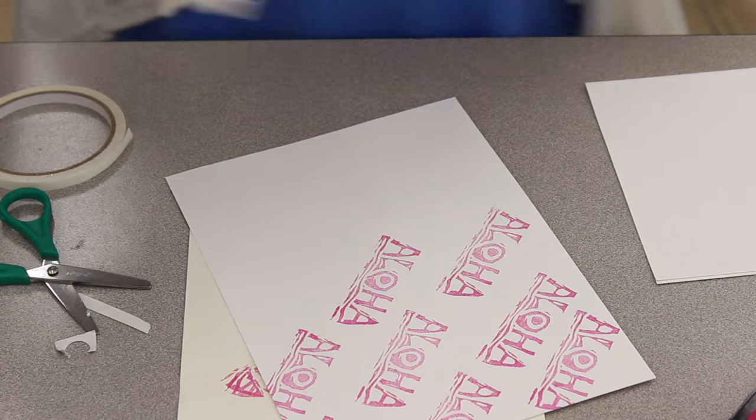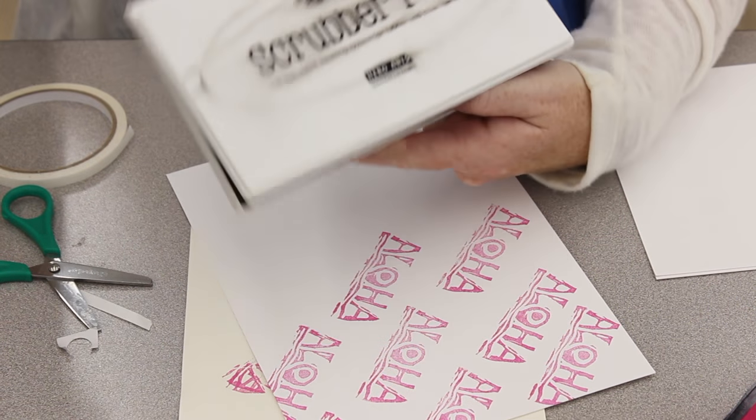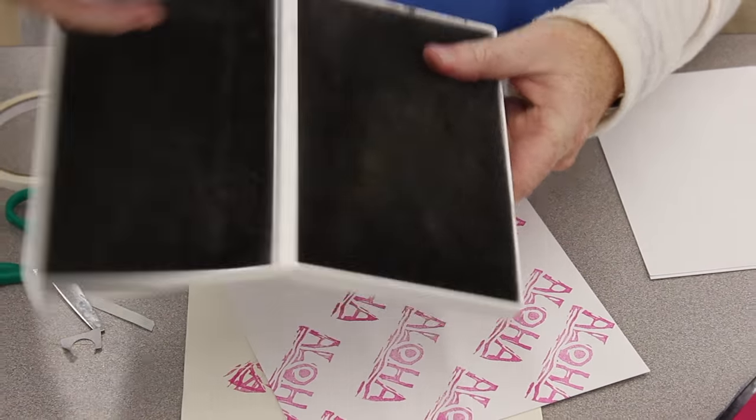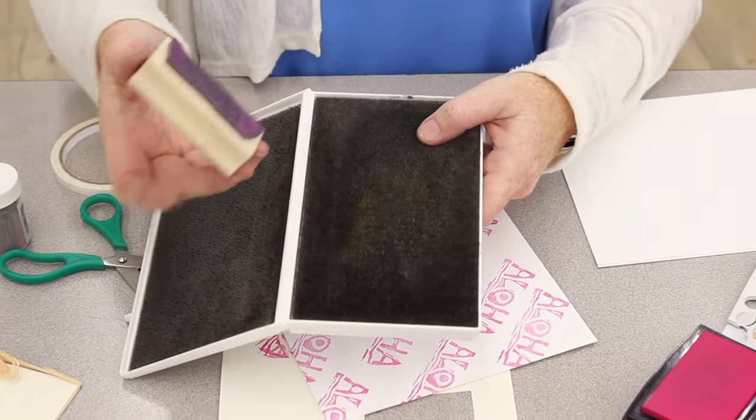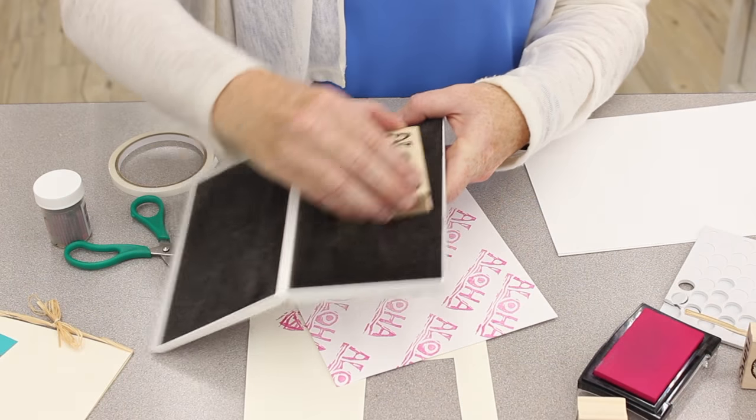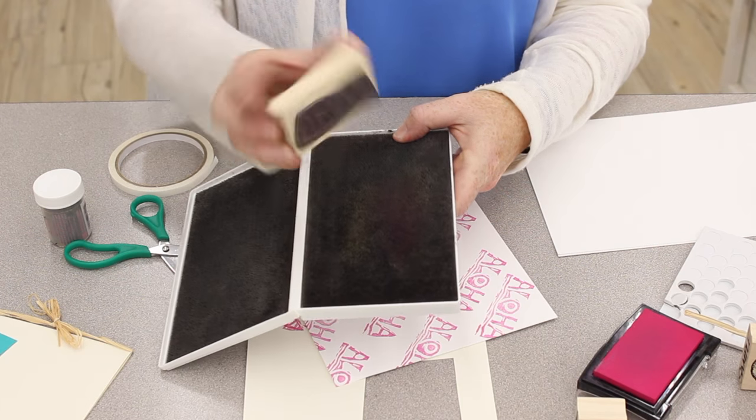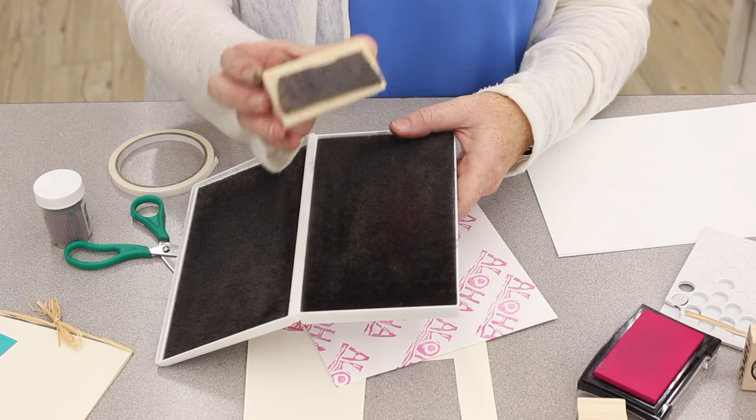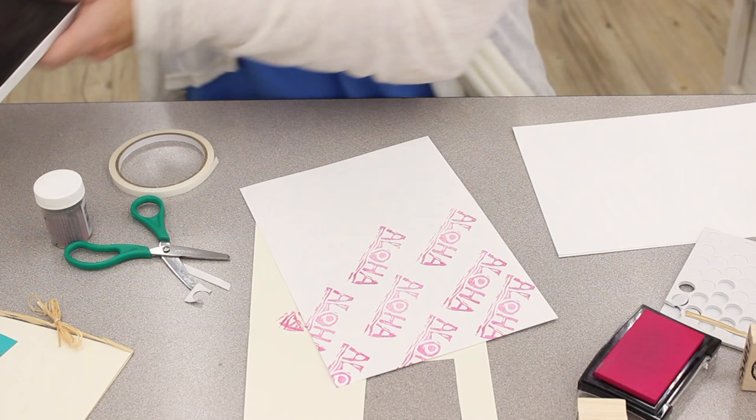And I wanted to show this, this is a scrubber pad so it has these little scrubbies on it and it's great. You just take your stamp, go like this and it removes the ink. Awesome, great little tool, great to have.